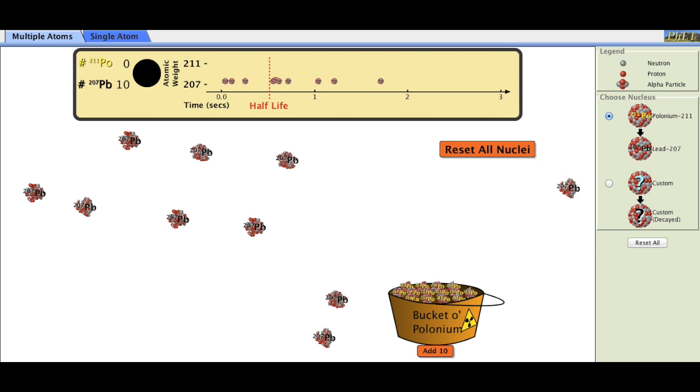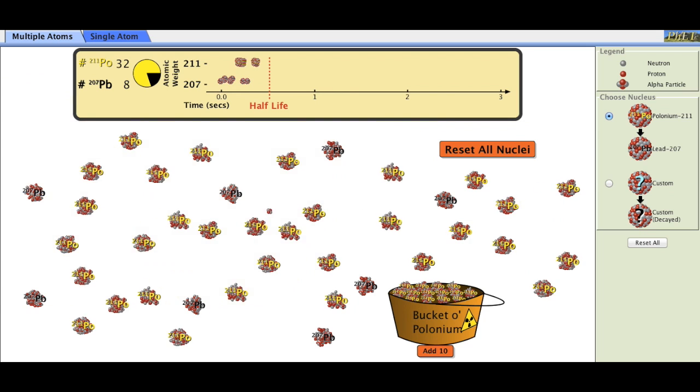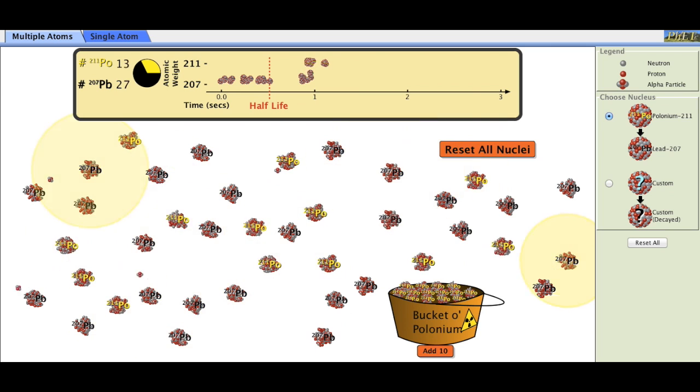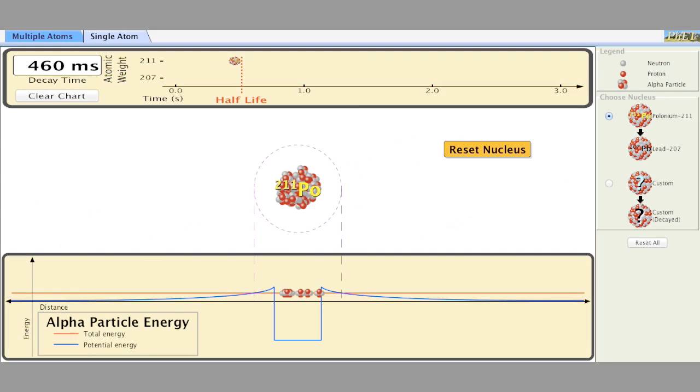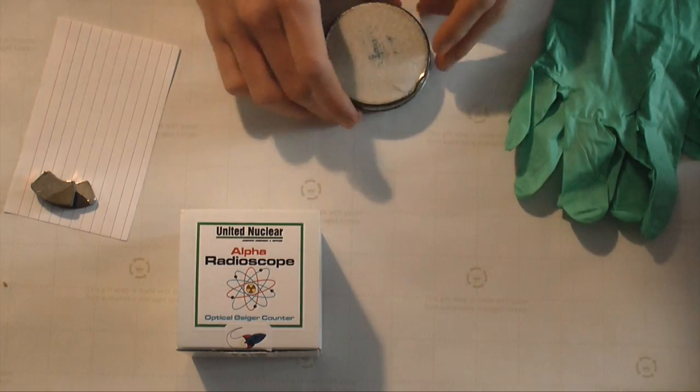Now, before we get to playing with alpha radiation, it's probably important to know how it works. So this is an animation of polonium turning into lead by giving off a helium nucleus, which is an alpha particle. Now here's a close-up of that same radiation happening. It gives off two protons and two neutrons—that's an alpha particle.